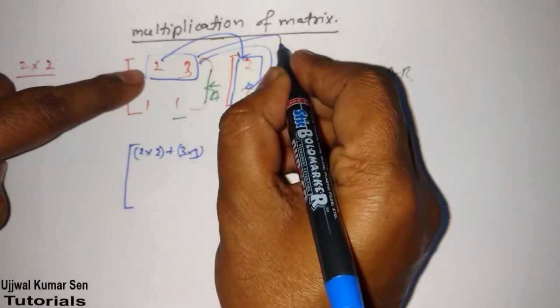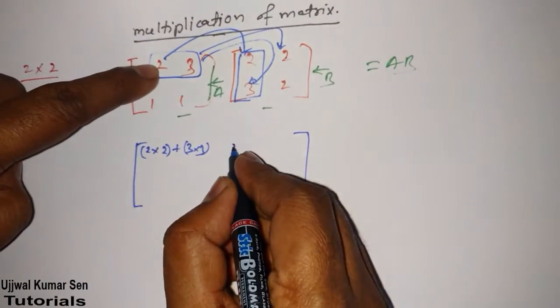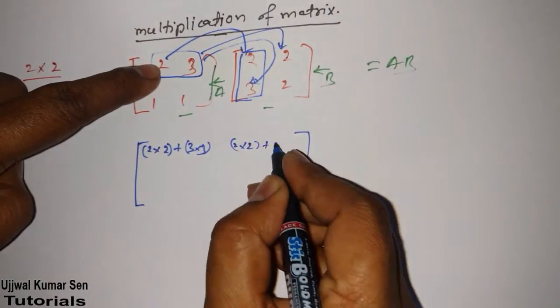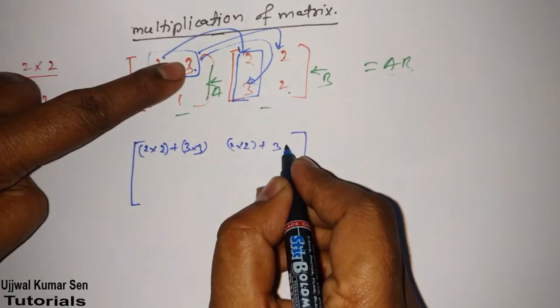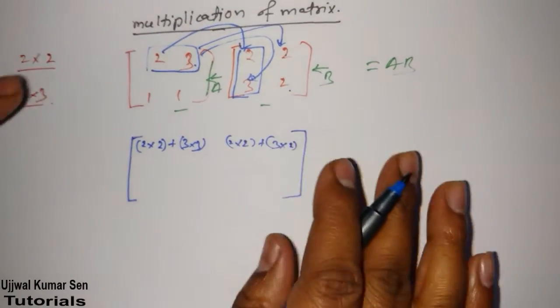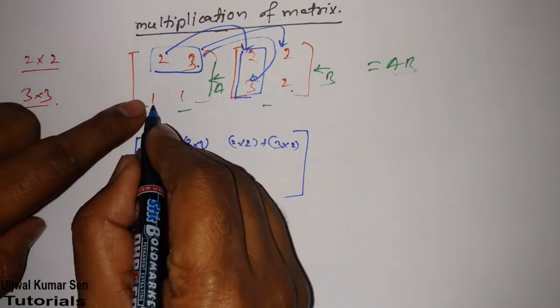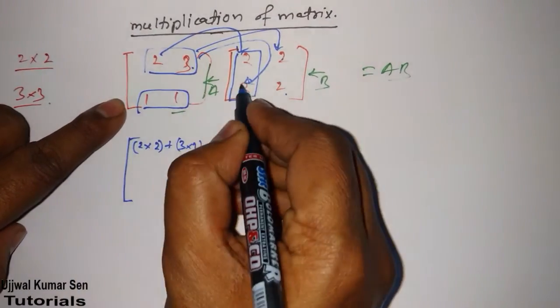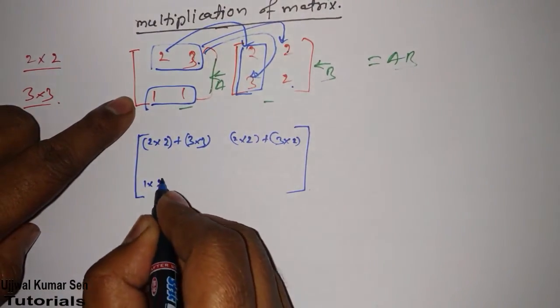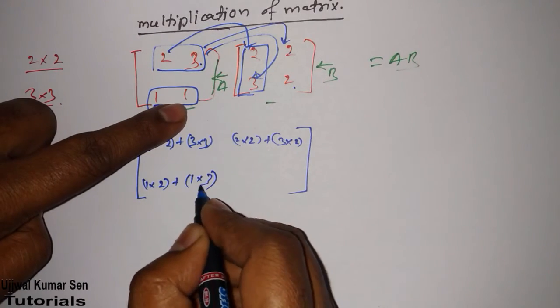Now, we will move to the next column here. So, 2 multiple 2 plus 3 multiple 2. Just keep your concentration here, how exactly I am doing it. Now, 1 multiple, this is the row and the same column. So, 1 multiple 2 and 1 multiple 3.